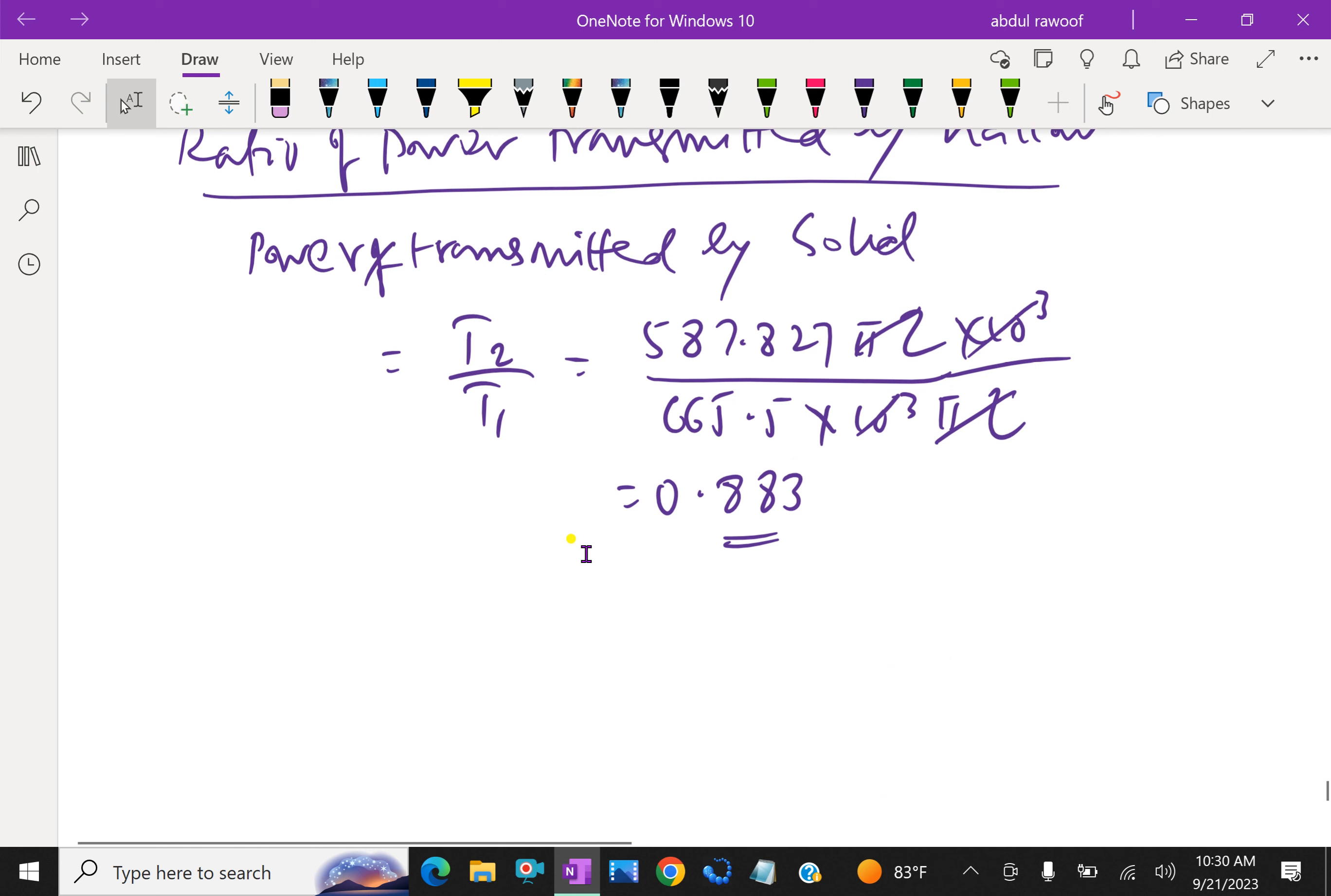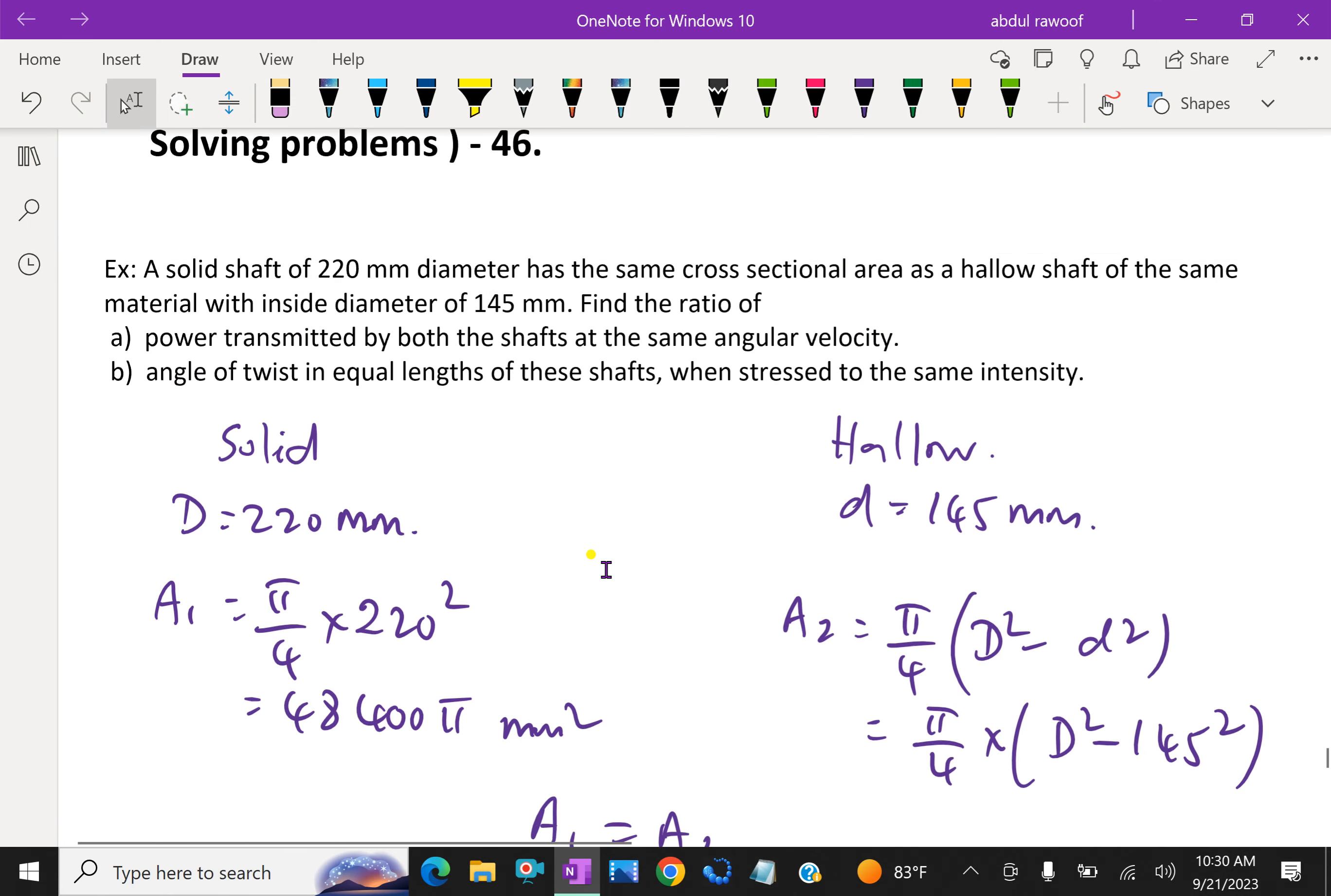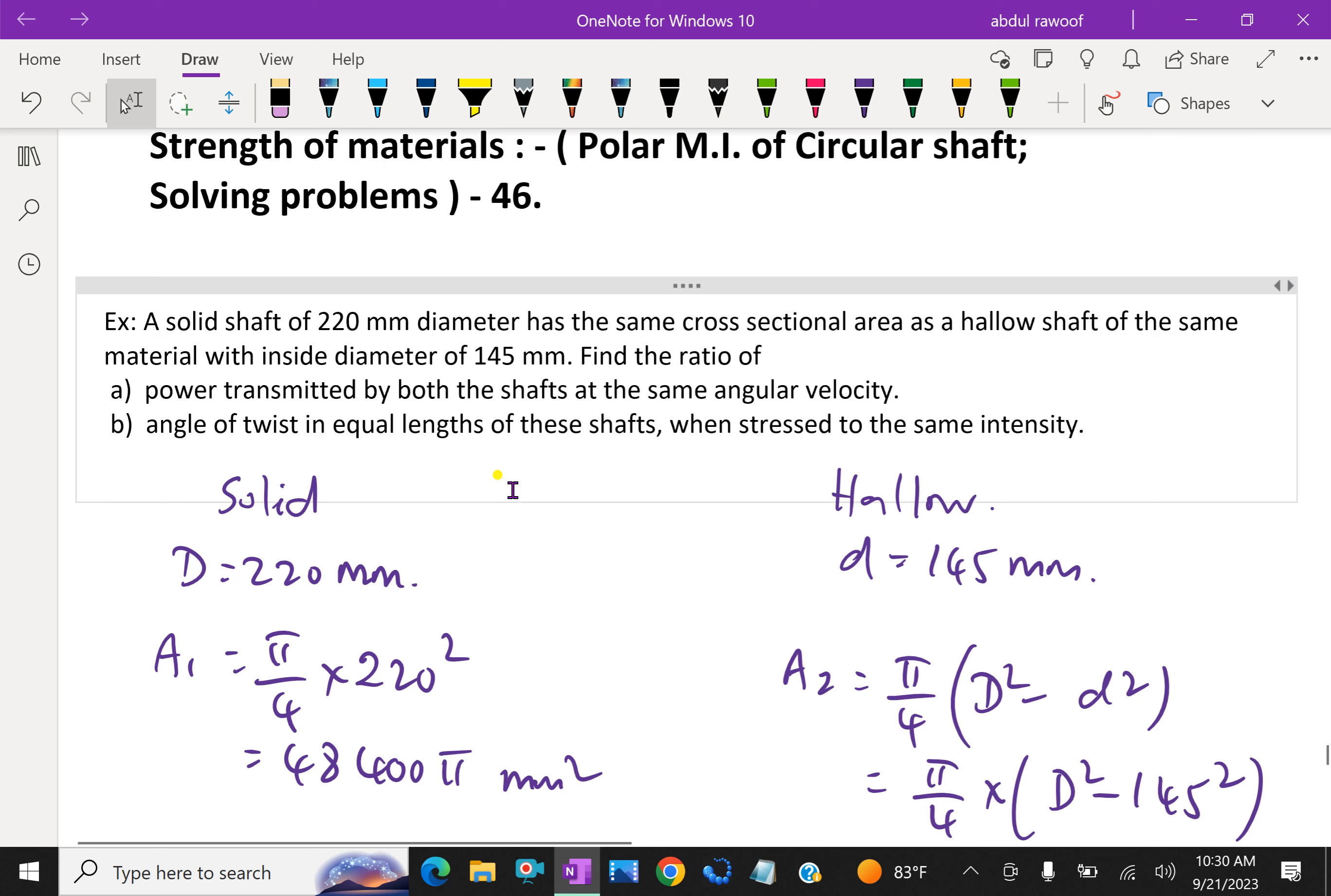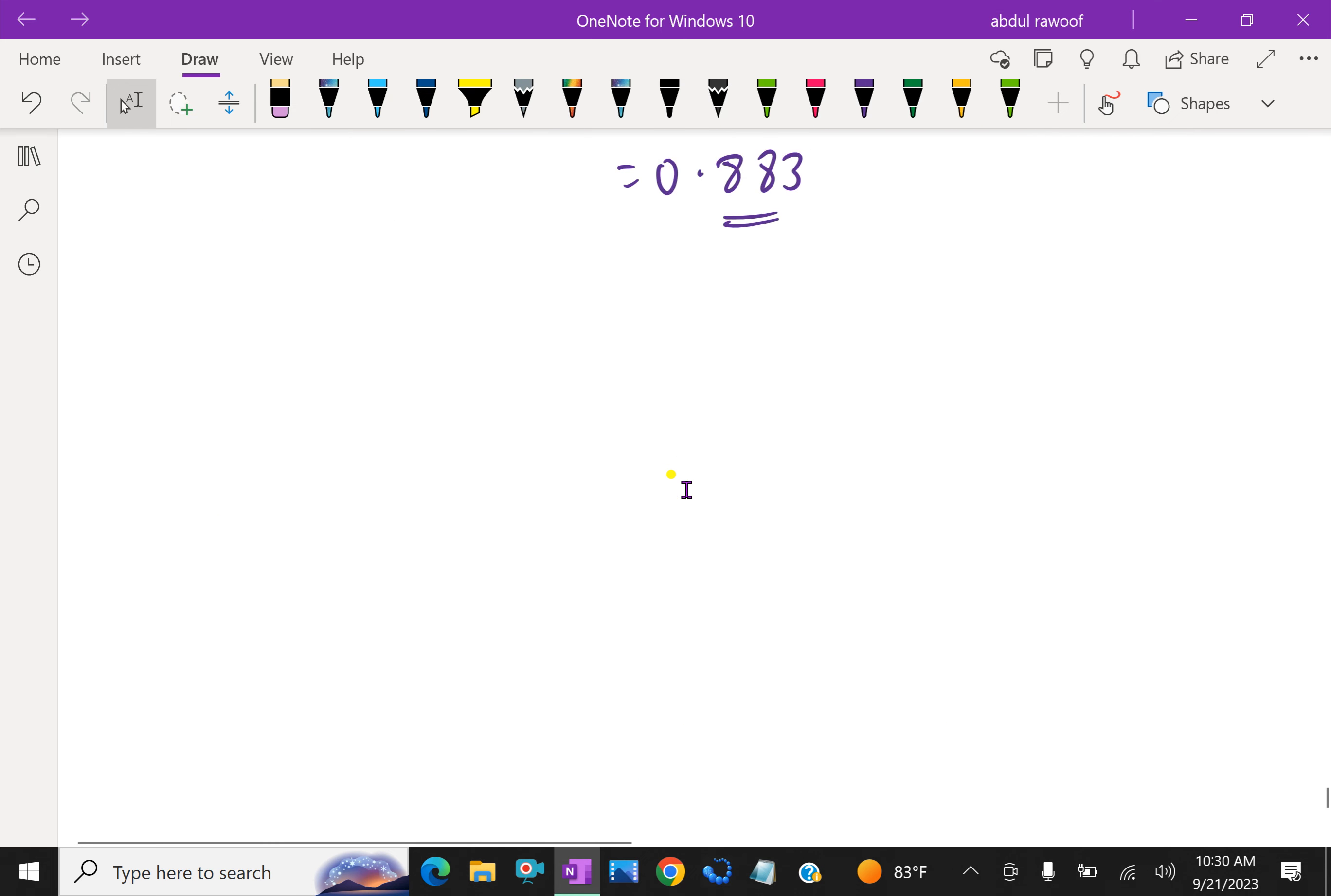Now we got the ratio of power transmitted by shaft. The next part of the question is angle of twist in equal lengths of these shafts when stressed to the same intensity. Ratio of angle of twist: τ/R = Lθ/C, therefore θ over L.